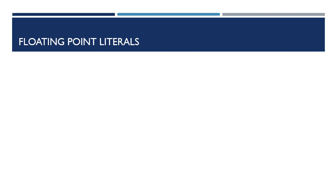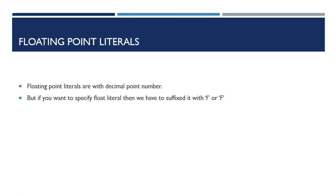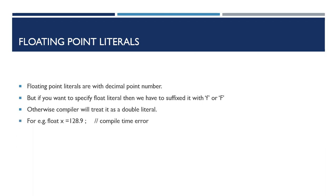So what are floating point literals? Floating point literals are values that have a decimal point. If I am going to assign a floating point literal to a float type, I have to suffix it with small 'f' or capital 'F'. But if I am going to assign a floating point literal to double type, I don't need to suffix with 'd' or 'D', because the compiler treats any decimal value as double type by default.